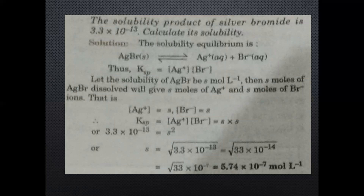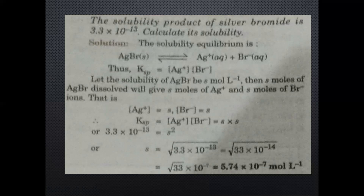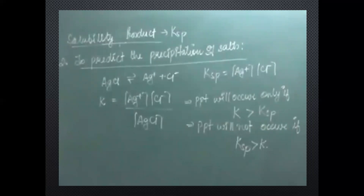For AgBr (AB type), Ksp = s². We take the square root of Ksp to get s. To simplify the calculation, we adjust the decimal point so the number under the root becomes easy — for example, making it 14 or 33, since the square root of 14 is between 3 and 4, and square root of 33 is between 5 and 6 (approximately 5.74). So the answer is 5.74 × 10⁻⁷ mol/L.